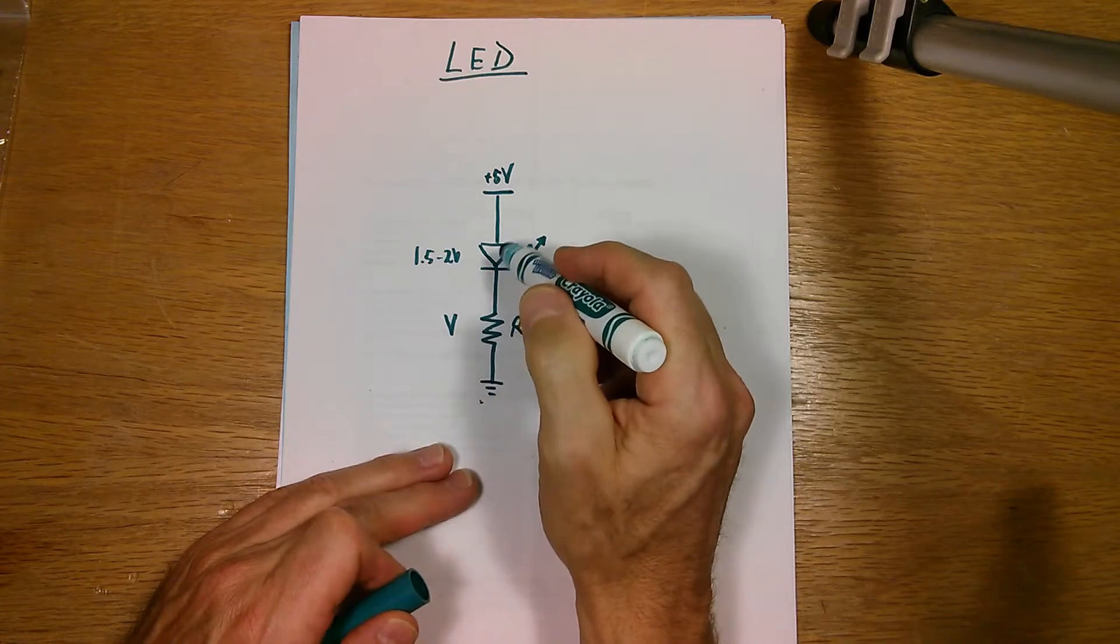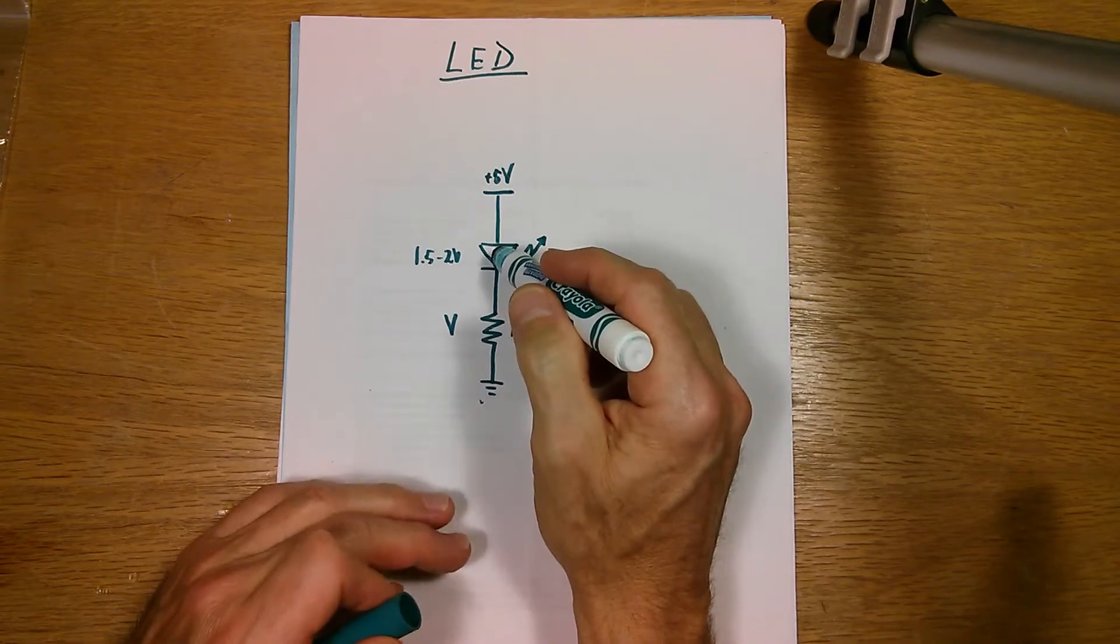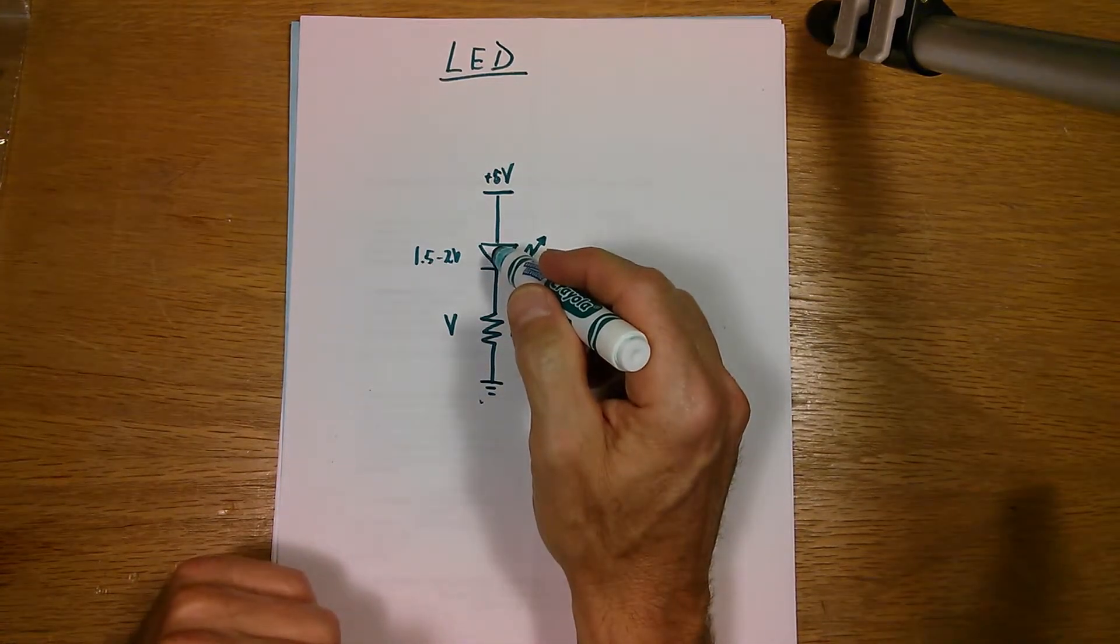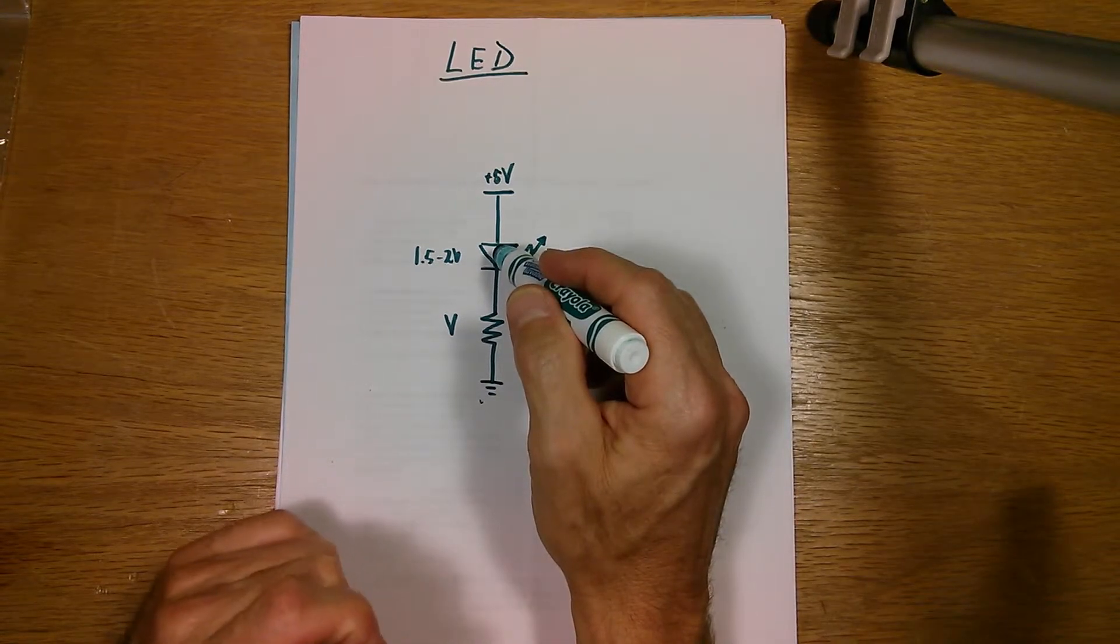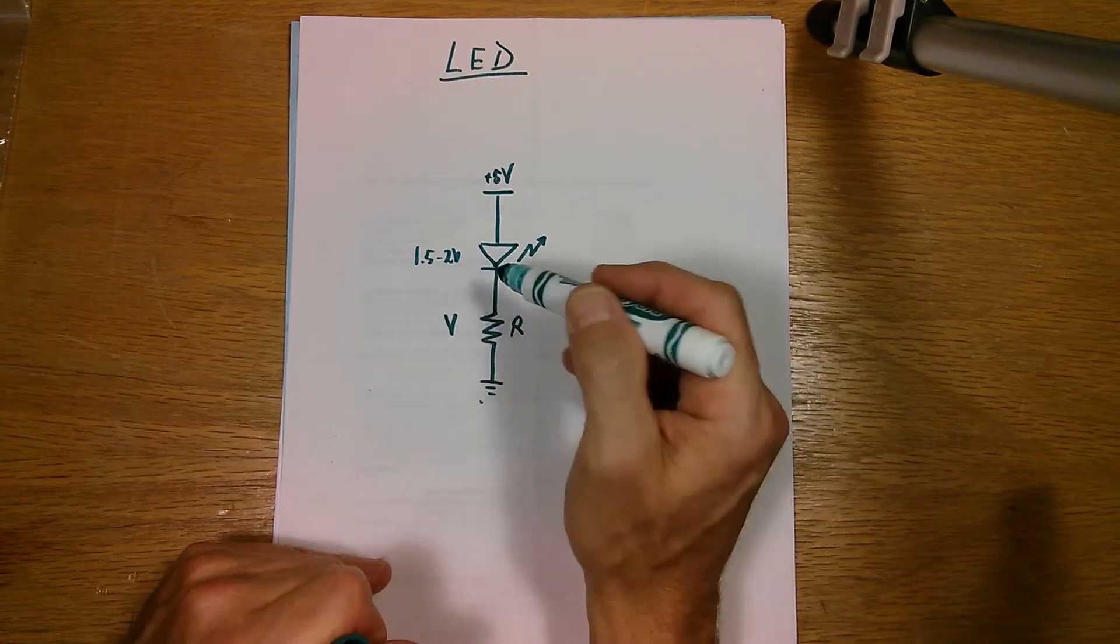This voltage will increase as you increase the amount of current. But in order to get 5 volts across the diode, if you had no resistor there, this was shorted out, you would have to pump probably a number of amps of current through the diode and it's just not made to handle that. It works best in this voltage range.